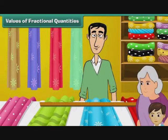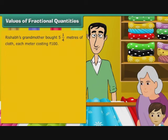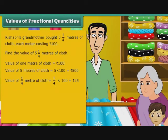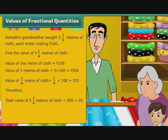Now look at another example. Rishabh's grandmother bought five and one-quarter meters of cloth, each meter costing rupees hundred. Find the value of five and one-quarter meters of cloth. Value of five meters of cloth is five multiplied by hundred, which equals rupees five hundred. Value of one-quarter meter of cloth is one-fourth multiplied by hundred, which equals rupees twenty-five. Therefore, total value of five and one-quarter meters of cloth is five hundred plus twenty-five, which equals rupees five hundred and twenty-five.